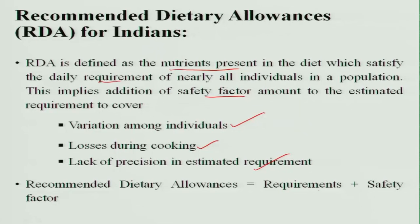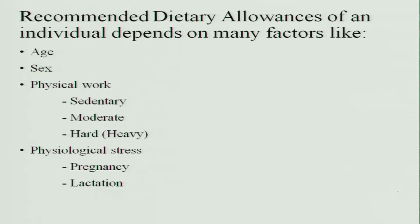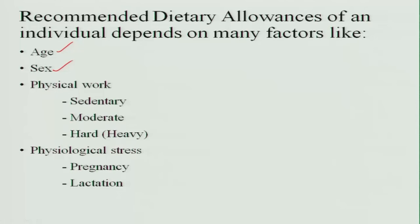Recommended dietary allowances include requirements plus a safety factor, and they depend on various factors like the age of the individual. We have different age groups — we cannot recommend the same amount for an infant compared to an adult man or a pregnant woman. Then sex — the weight and height of individuals are different, and metabolism is slightly different with gender. We also take physical work into consideration, depending on whether they are sedentary, moderate, or heavy workers, because if a sedentary person eats an excess amount it will result in obesity.